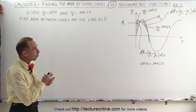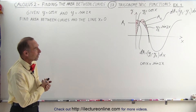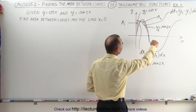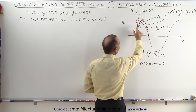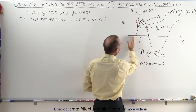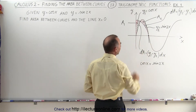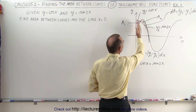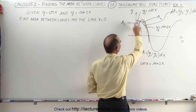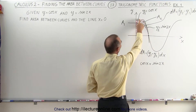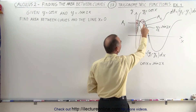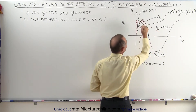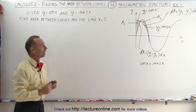We have one function y equals cosine of x and the other function y equals sine of 2x. Because of the fast repetition of sine of 2x, we have two areas defined between them — between the line x equals zero (the y-axis) and the point where they meet. On the left side, call it A1, y1 is the upper side of dA. For area A2, y equals sine of 2x is on the upper side of that area element dA.